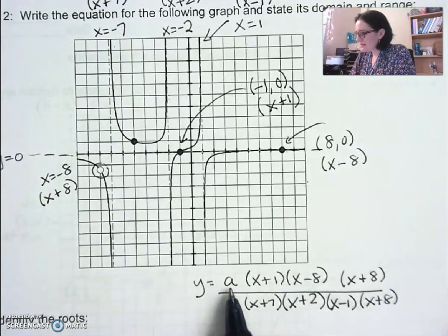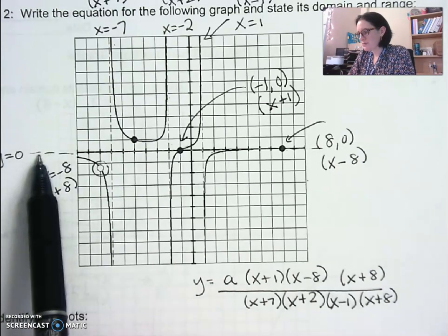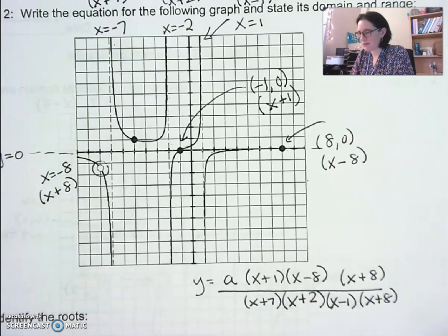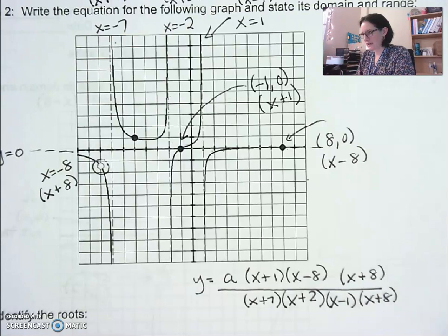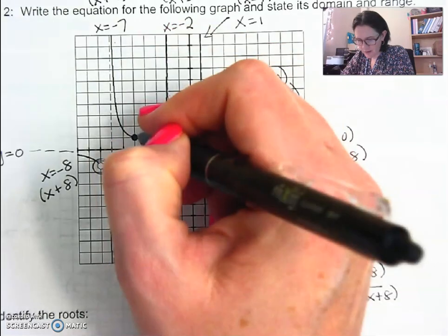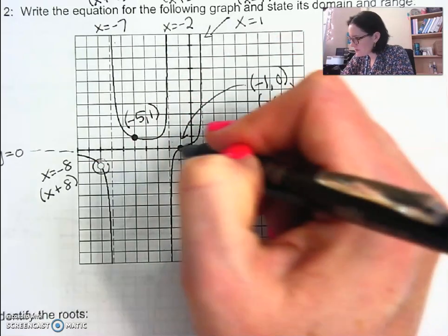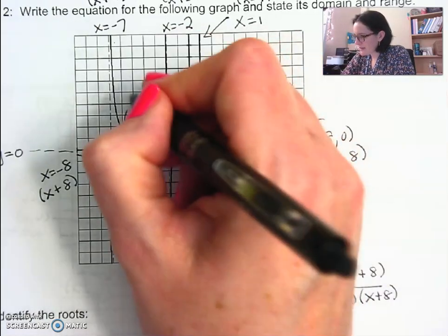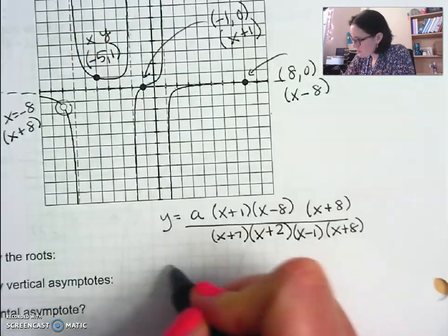Since this is not a balanced situation, I can't just take the asymptote value and plug it in for 'a'. We have to use a point — just like we've done with other parent functions. Take a point with integer values and plug it in to solve for 'a'. The point marked here is (−5, 1), so I plug in y = 1 and x = −5 everywhere I see an x.